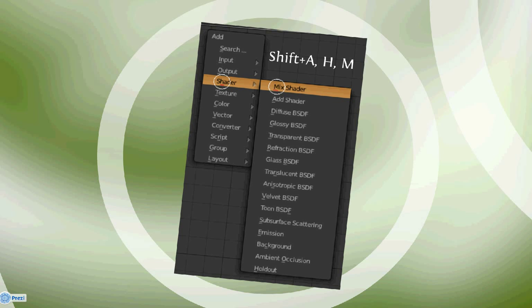You might ask, how do you want to know what's the shortcut for every node? It's really simple. Most of the nodes in the menu have a line under one of their letters. That's the letter you want to press when adding that node. For example, it's Shift A, H, M for Shader Mix Node. Simple, isn't it?